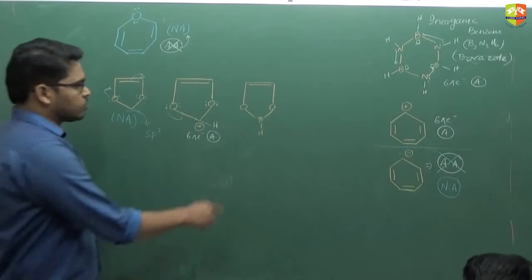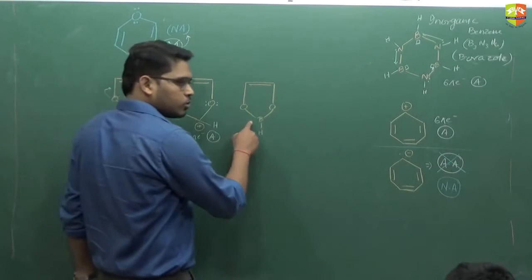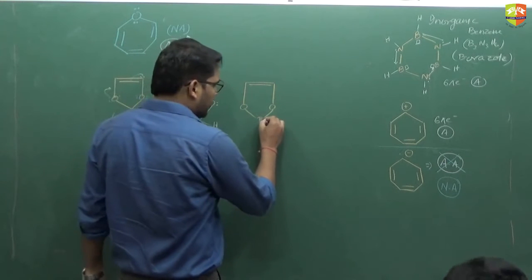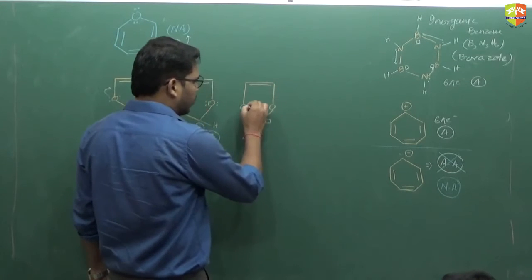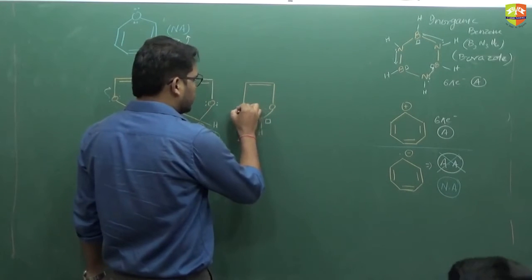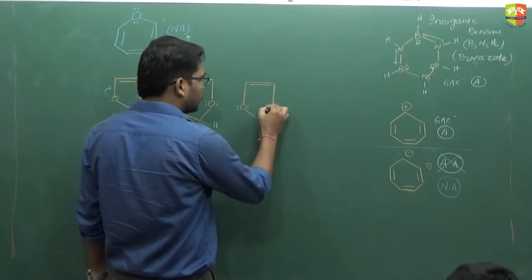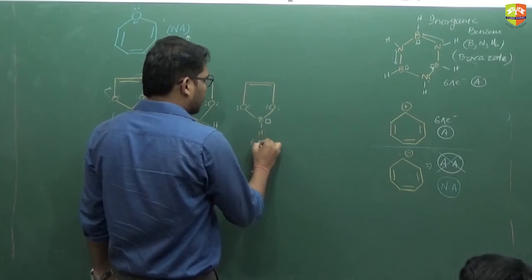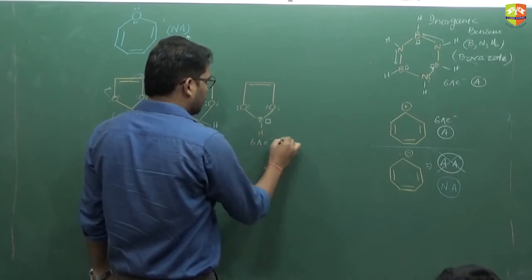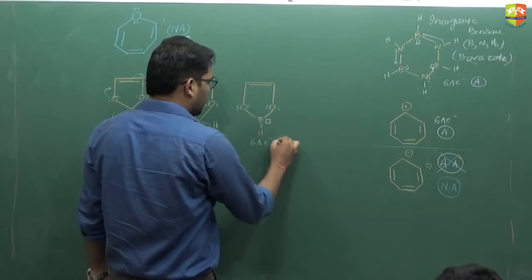What about this one? There's no charge here, but boron has a vacant orbital. This is again in conjugation — 6 pi electrons, aromatic.